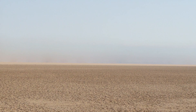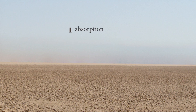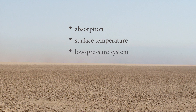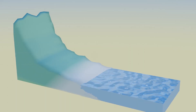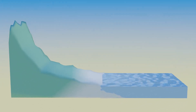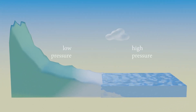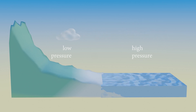High albedo surfaces reflect a significant amount of sunlight, leading to less absorption and lower surface temperatures. This can weaken the development of low pressure systems over the land. Low pressure systems are essential for drawing in moist air from oceans or seas, which is a crucial factor in the onset and sustenance of monsoonal rains.